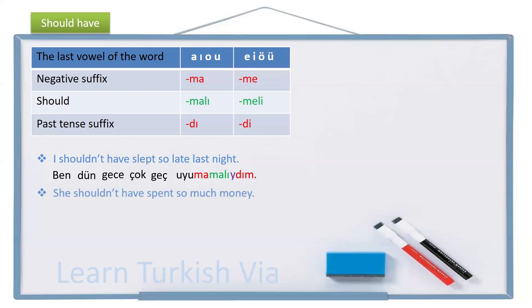Another example. She shouldn't have spent so much money, but she did, unfortunately. So, she, o, so much money. Çok fazla para. Spend, harca, not spent, harcama, should not spend, harcamamalı, shouldn't have spent, harcamamalıydı, with the buffer letter.